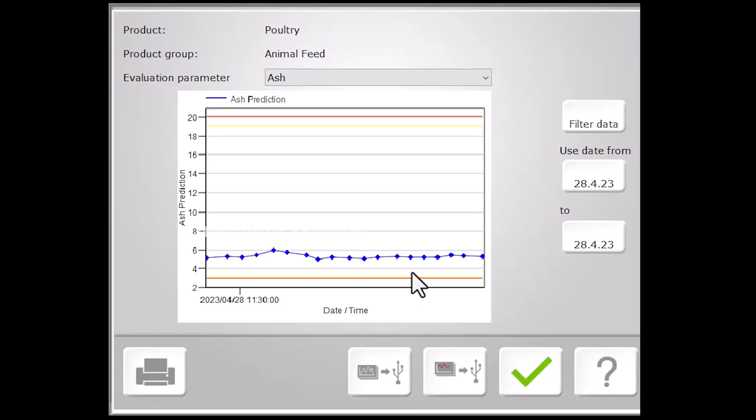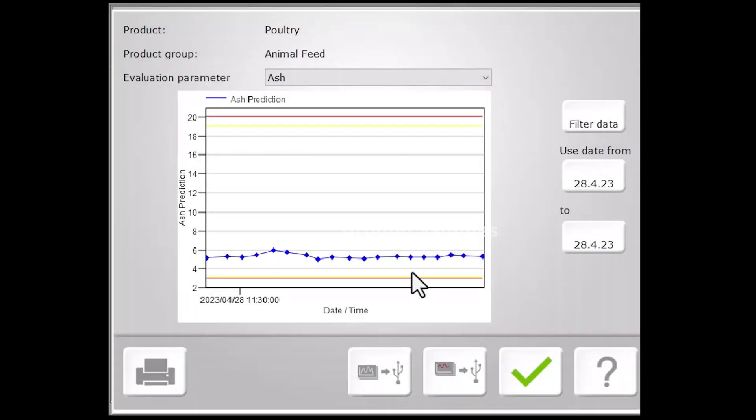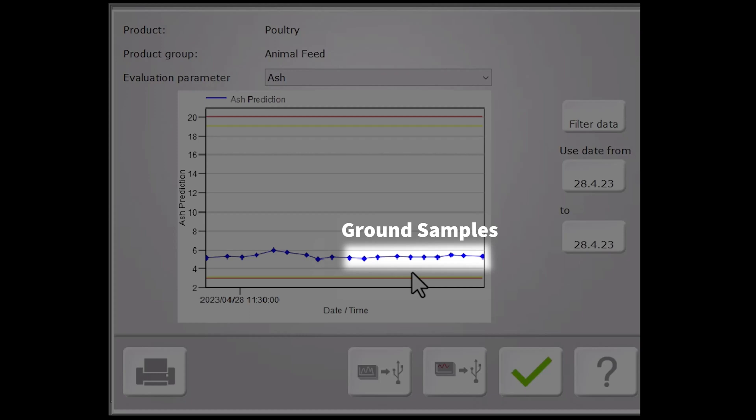We can see the repeatability of the replicates for our unground samples is reasonable for a heterogeneous sample, which are the first nine samples on our chart here. However, repeatability is markedly improved for our ground samples, which are the following nine samples, plus the sample we just scanned.